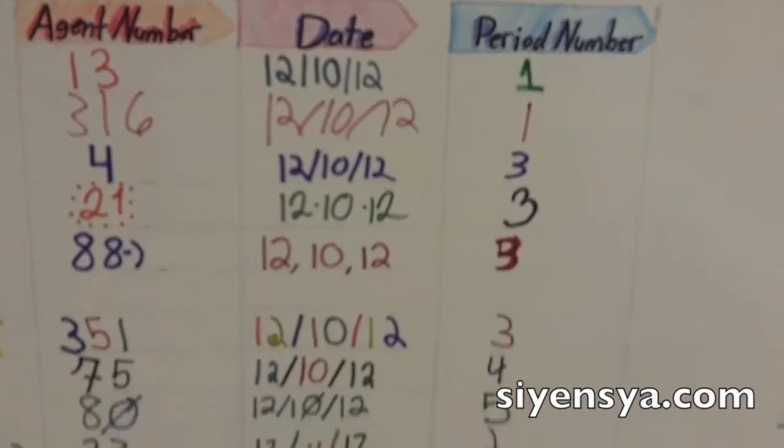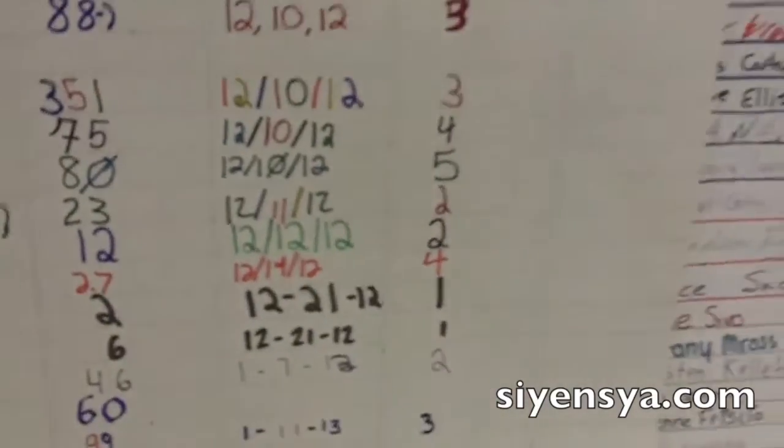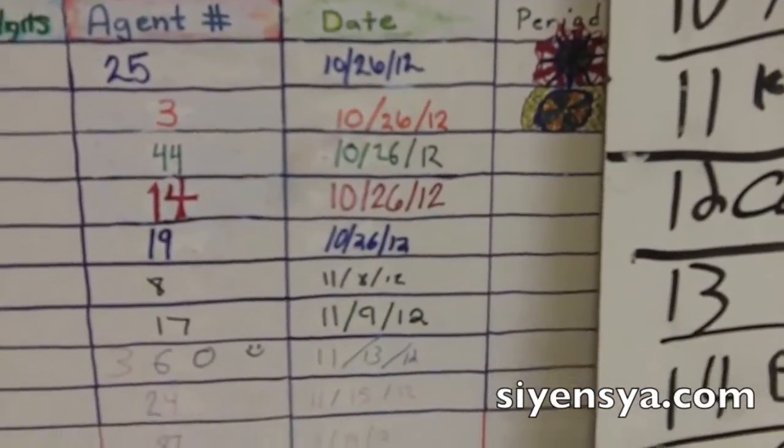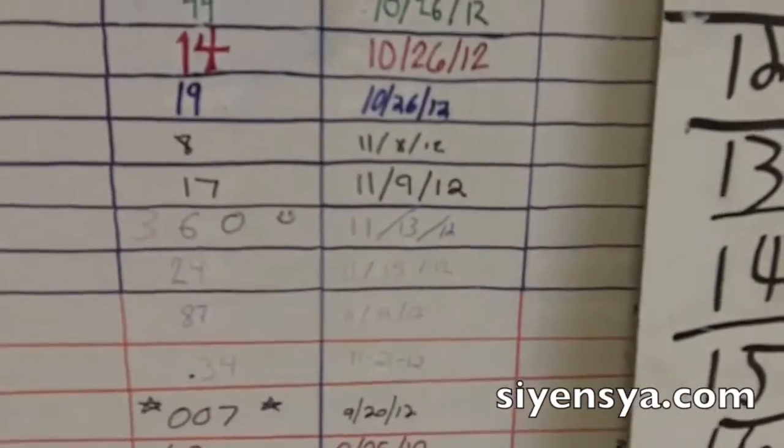We do a lot of word play and number play and science talk. Here are some more of my other agents over here. The reason I do this is to make the numbers relevant. It's something that they can see where I'm getting the numbers from — from the date. And in an interesting way, the date is somehow related to an agent in class, and the students are all excited to find who is the agent related to today's date.